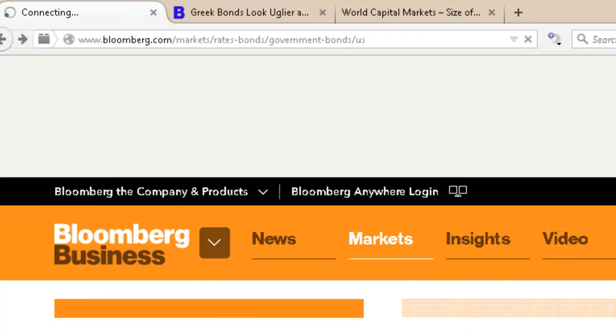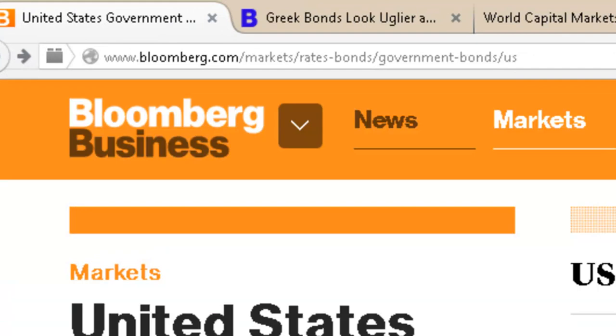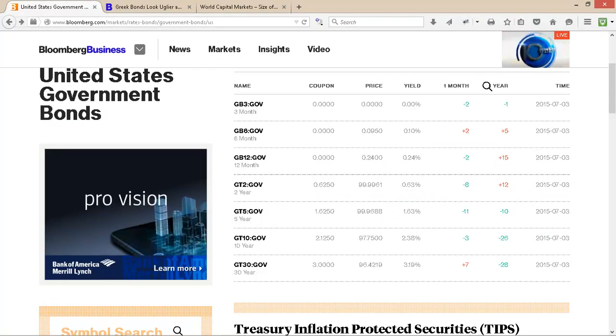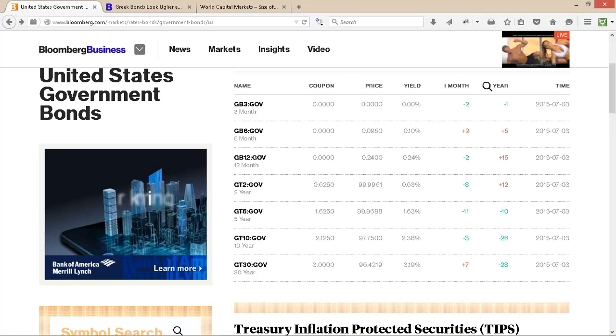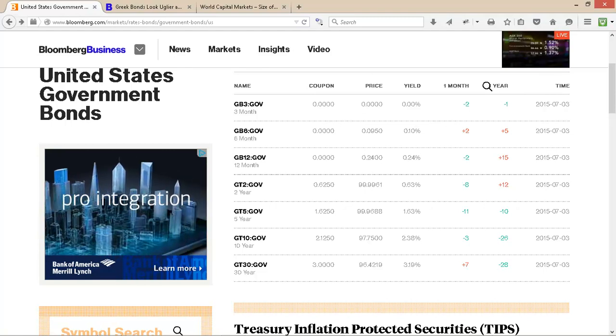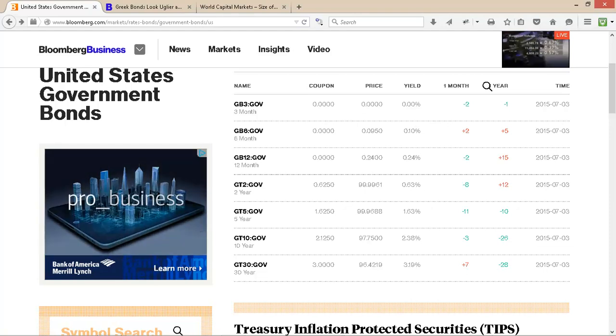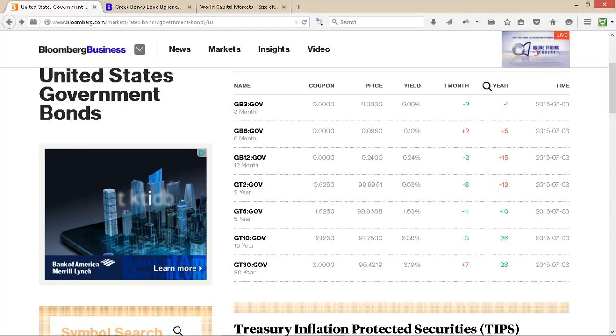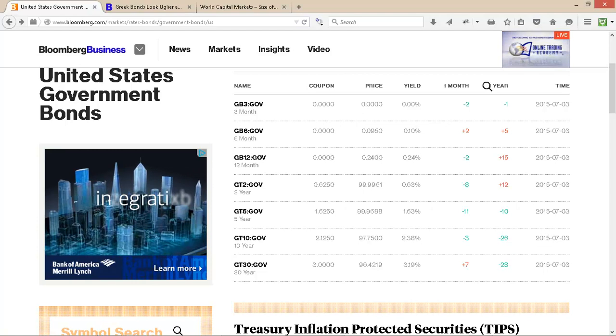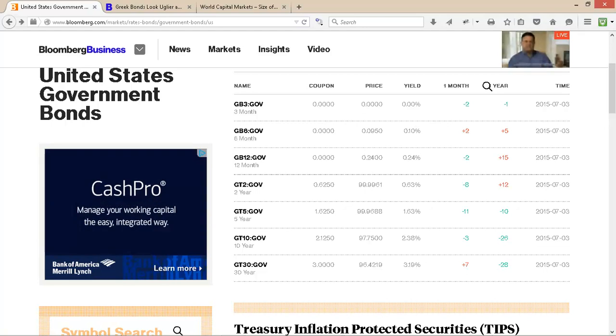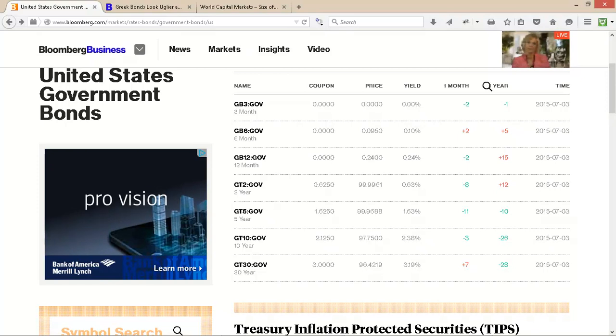At Bloomberg, we can see what the interest rates are. When the US government borrows money at auction, they're charged around 0.63% for short-term loans. For five years, they pay 1.63%. The longer you want money, the more you're typically charged, since your money is locked away.